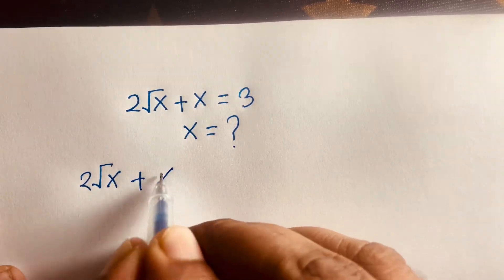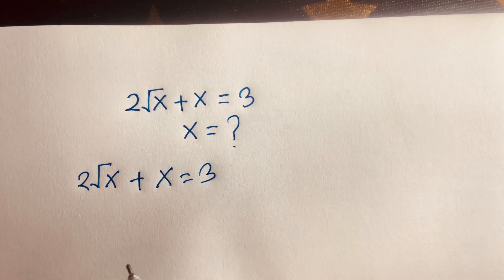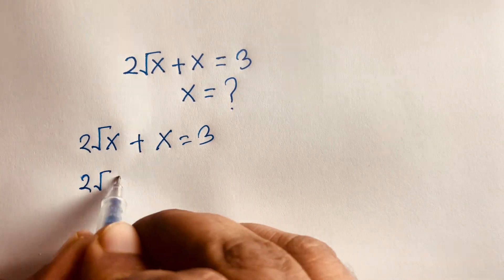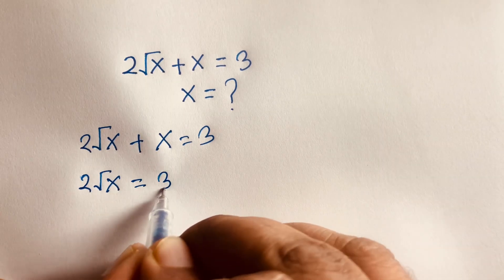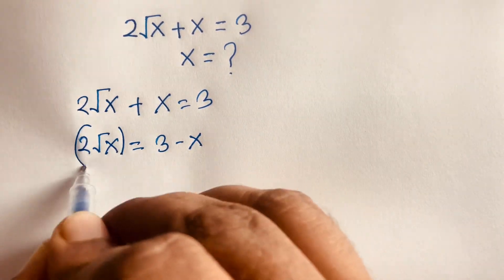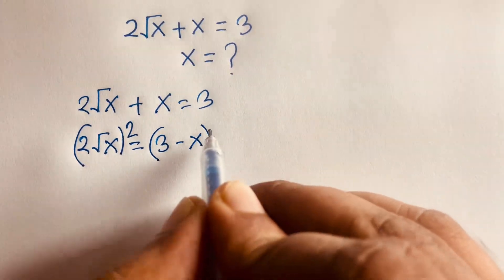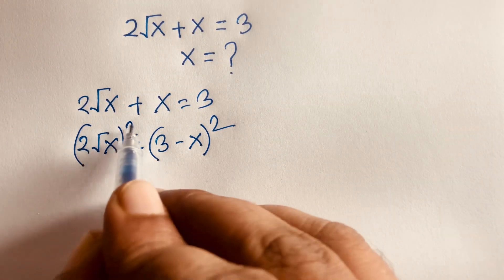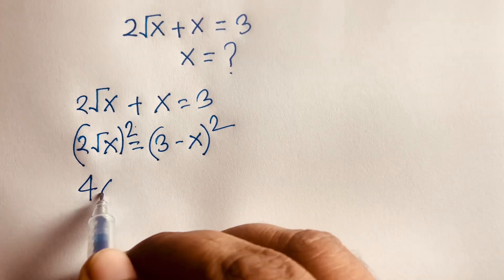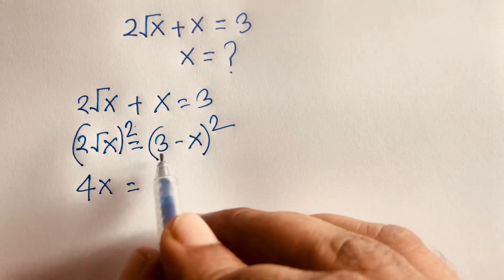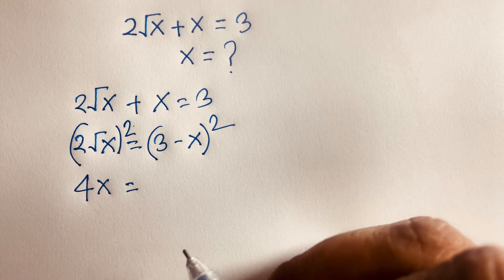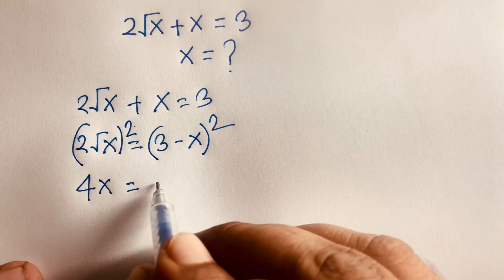Our question is 2√x + x = 3. This equation becomes 2√x = 3 - x. Then I square both sides. On the left, 2² = 4 and the square root is cancelled, so we get 4x. On the right, using (a - b)² = a² - 2ab + b², we expand (3 - x)².